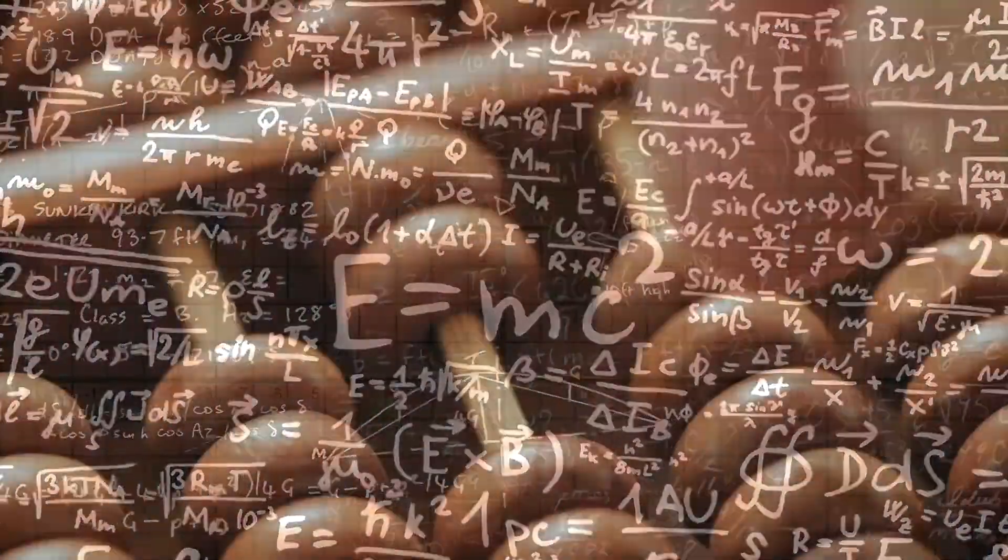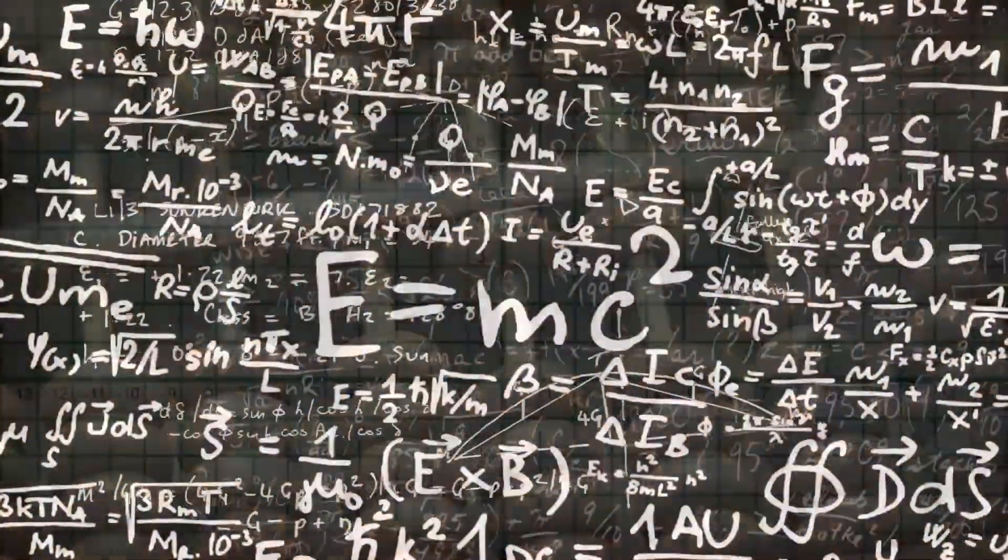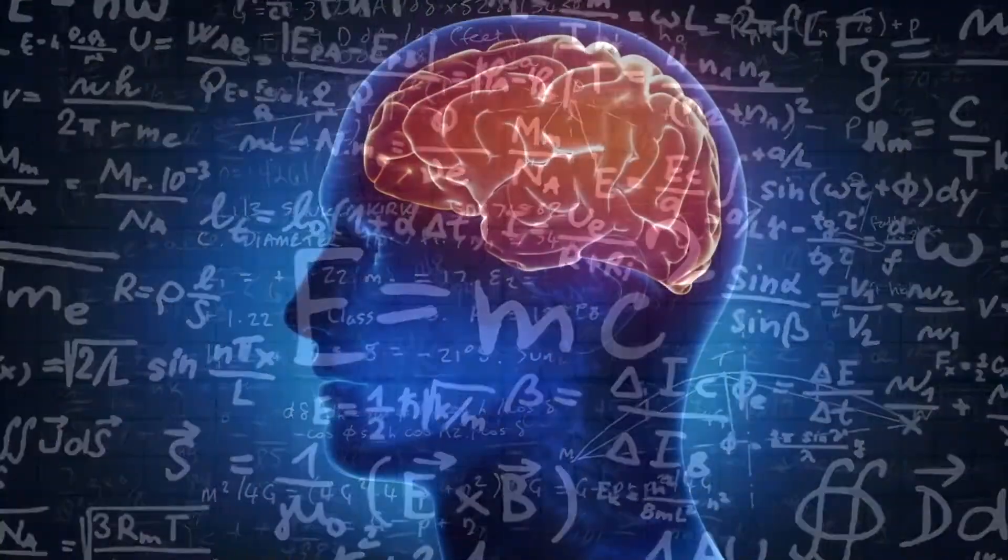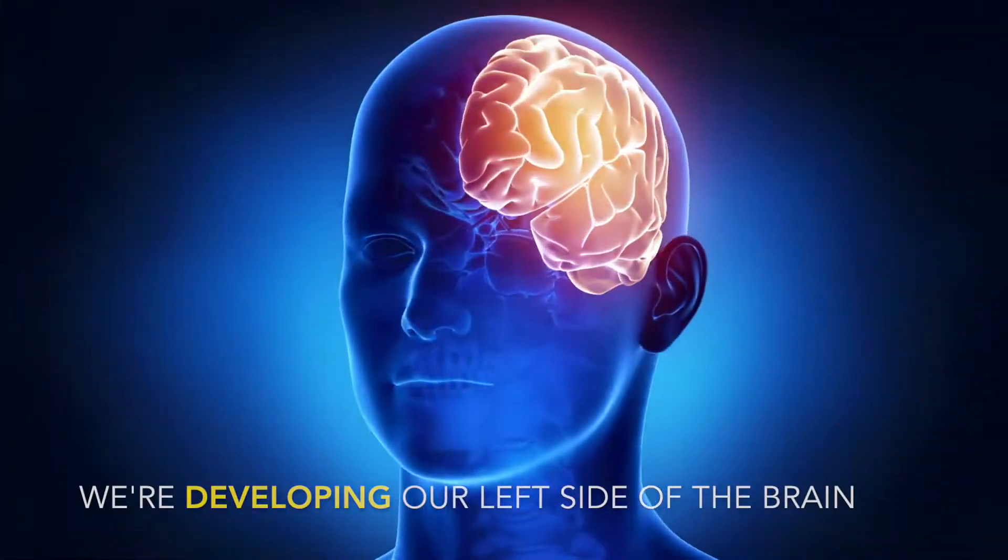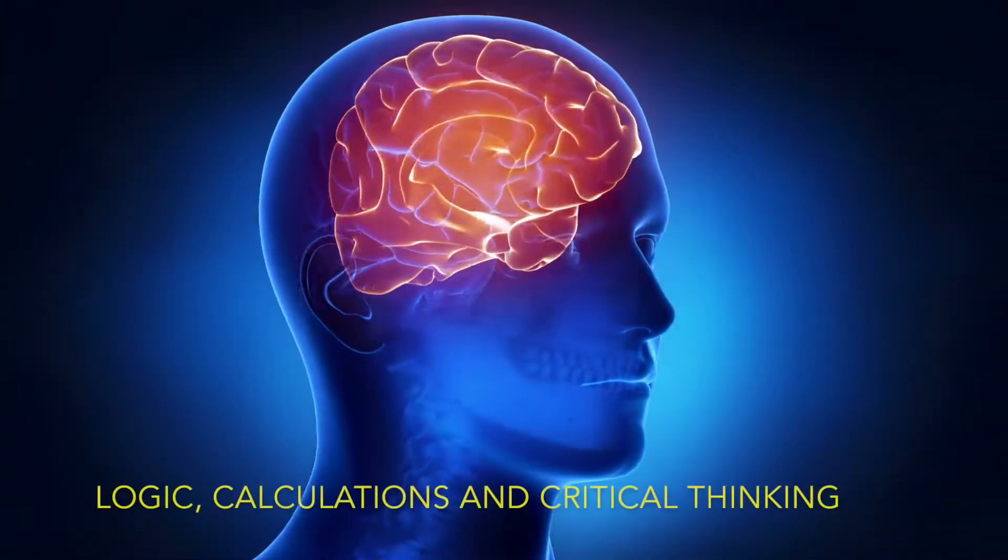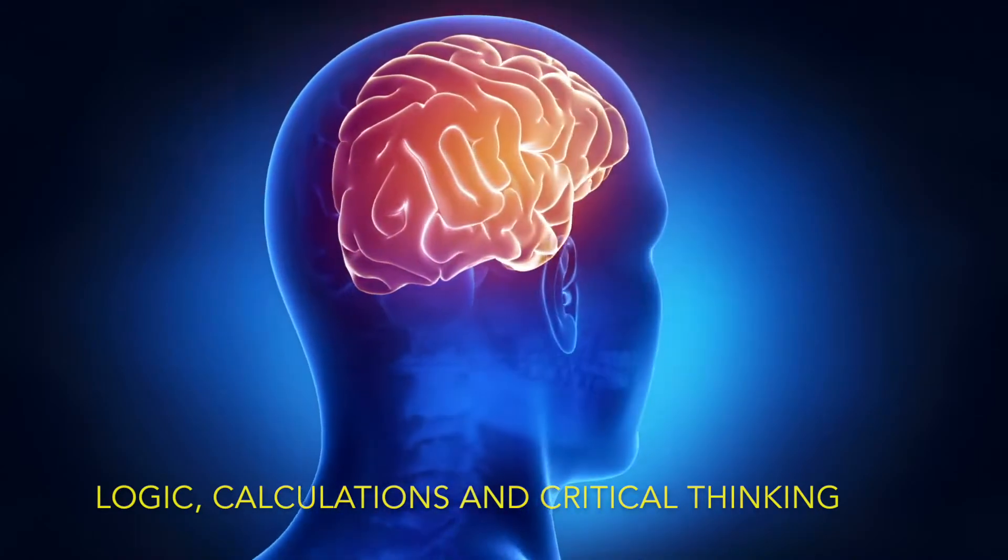Since we're performing arithmetic such as addition, subtraction, multiplication, and division, we're developing our left side of the brain which is in charge of logic, calculations, and critical thinking.